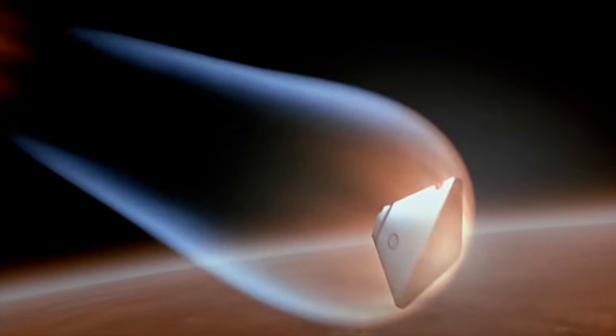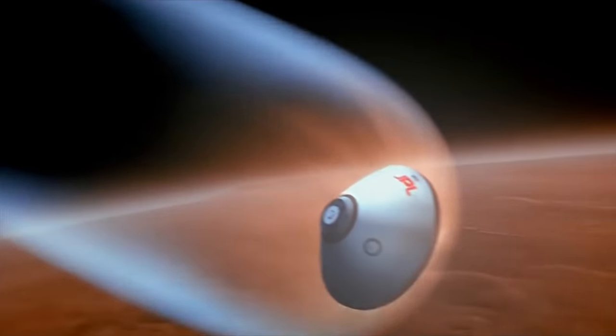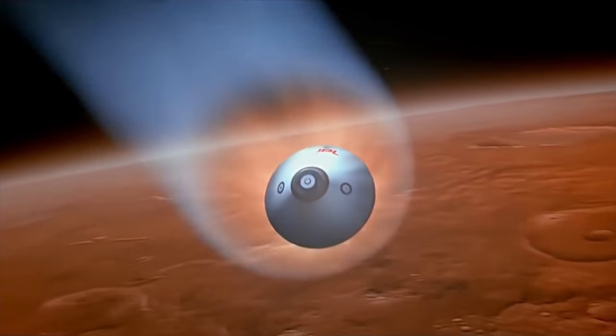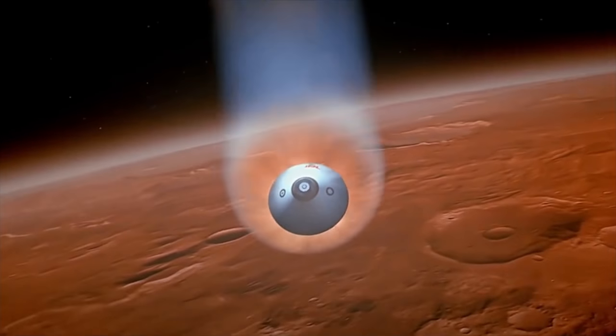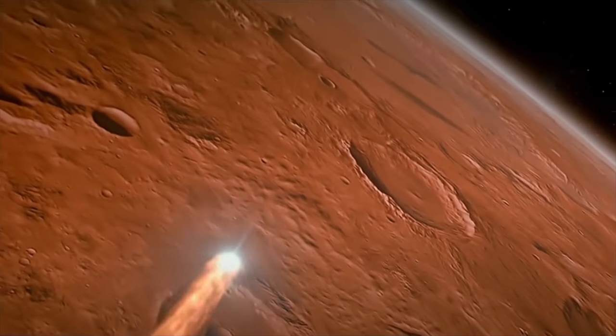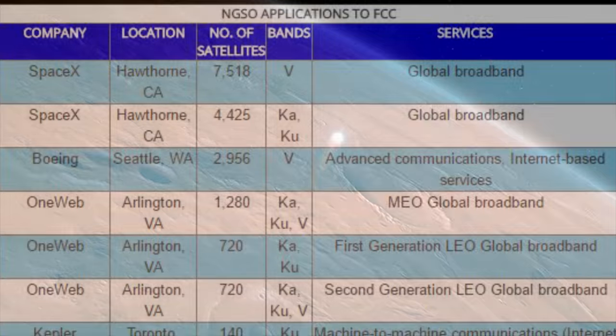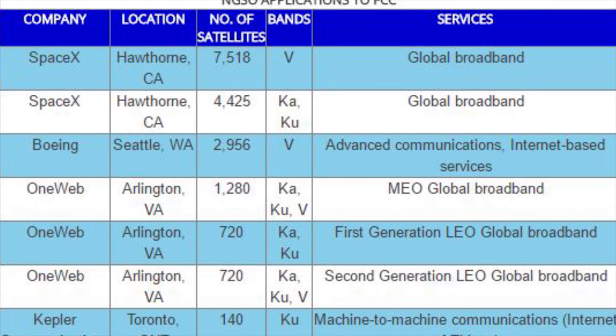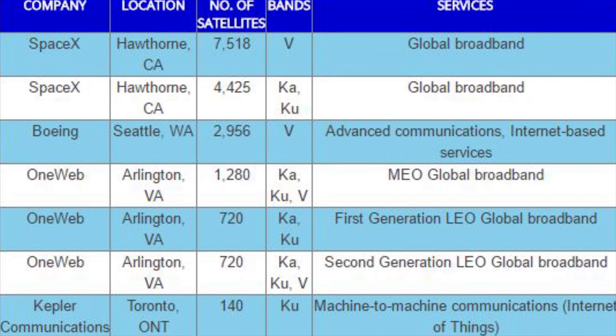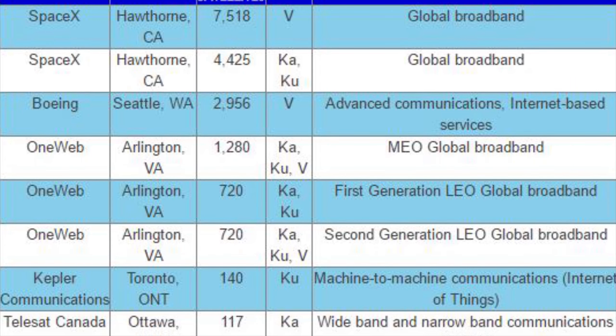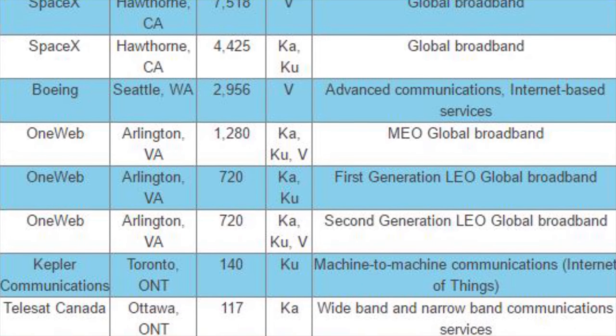SpaceX may very well be the first company to provide truly global wireless coverage with next-generation speeds and latencies, which can be constantly upgraded as new satellites are swapped and added to the constellation. Beyond Earth, SpaceX will be using this satellite constellation as a proof of concept for communication systems that will one day be used at Mars. As seen in this FCC approvals chart, SpaceX currently has the largest planned satellite constellation.